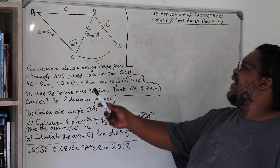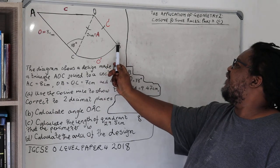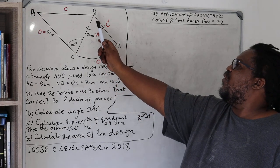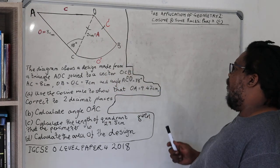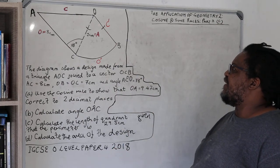If you were to run from A to C, from C to B, then B to O, and then O to A, the whole distance that you would run would be equal to 29.5 centimeters.